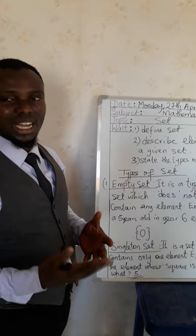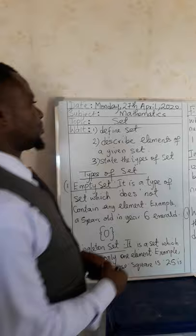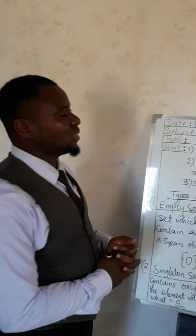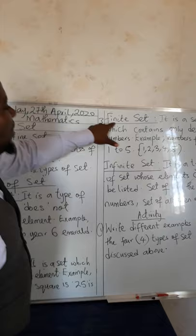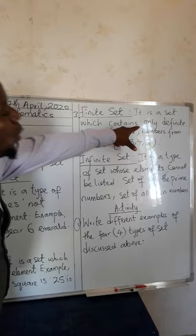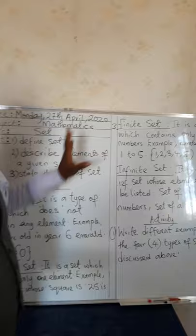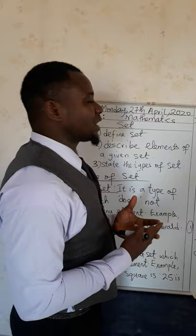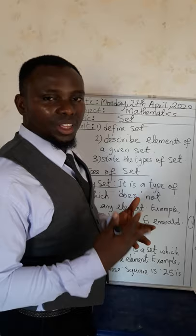Because 5 times 5 is 25. Now let's look at the third type of set, called the finite set. It is a set which contains only definite numbers — the numbers in this set are defined. Example: numbers from 1 to 5, which are 1, 2, 3, 4, 5. All these numbers are between 1 to 5.